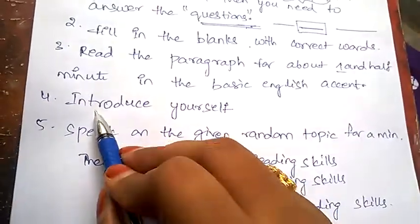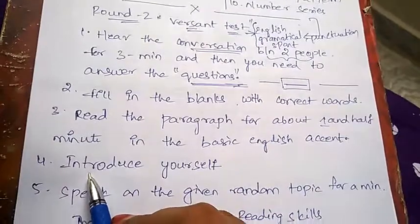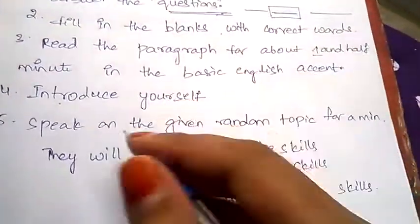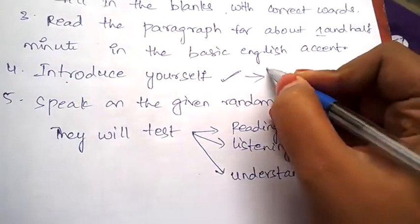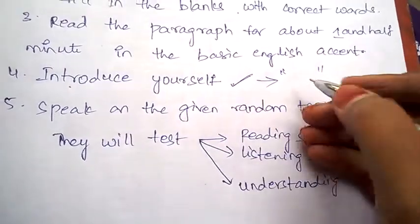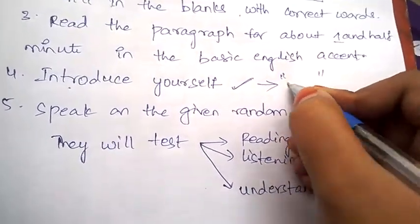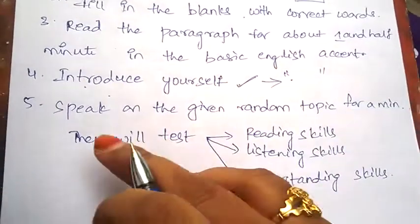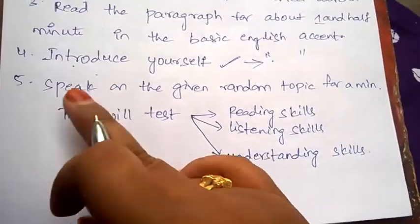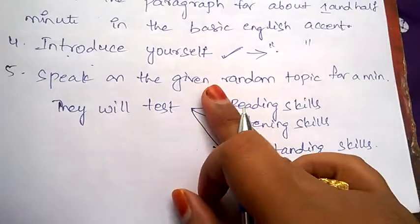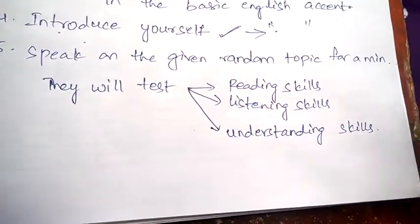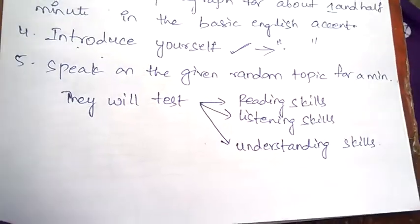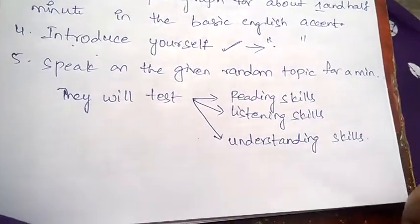In the fourth section of VERSE and test, you need to introduce yourself. The time limit will be given by the Deloitte people. And in the fifth section, speak on the given random topic for a minute. They'll be giving you some random topic, and you need to speak on that topic for a minute.